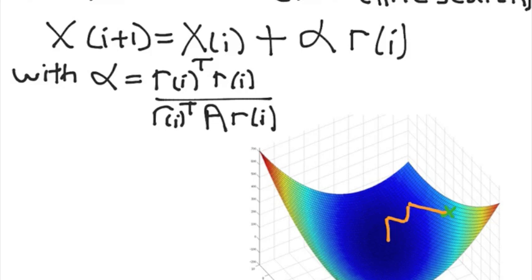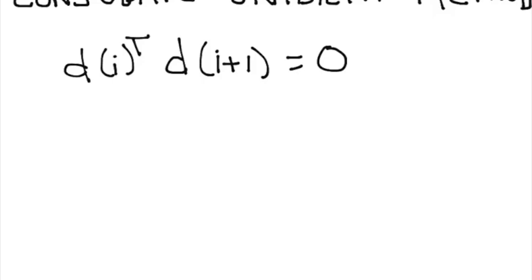So the conjugate gradient method is based on a very neat mathematical trick that says that instead of having the search directions orthogonal to each other or consecutive search directions orthogonal to each other as was the case in the gradient descent, which essentially means that r_i^T r_(i+1) = 0, rather than having them orthogonal we should have them A-orthogonal or conjugates of each other. And what this essentially means is that d_i^T A d_(i+1) = 0.